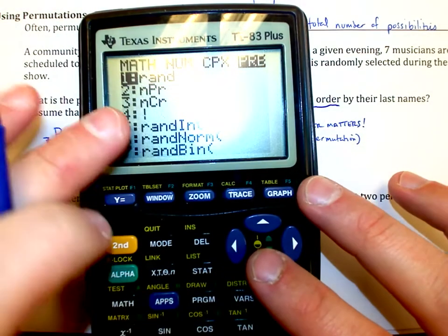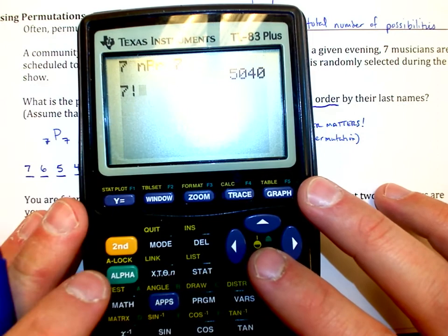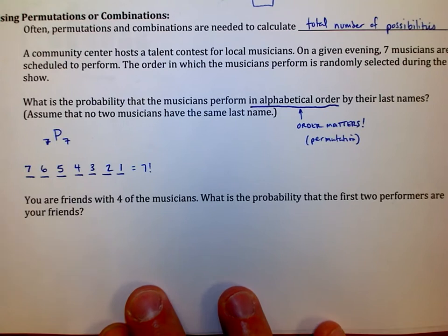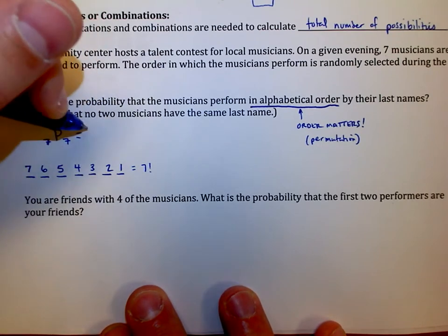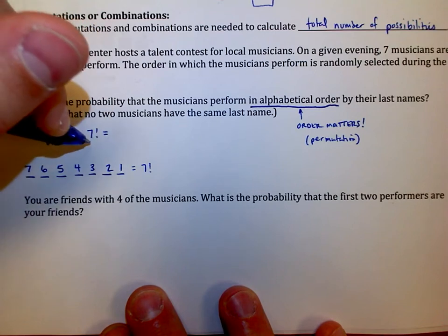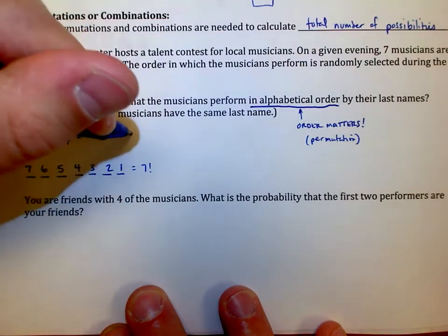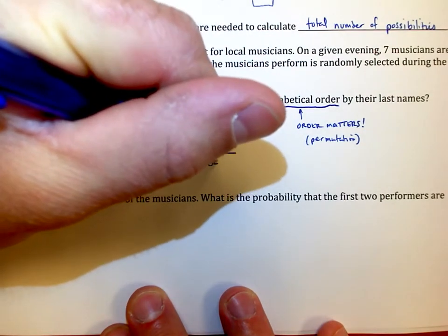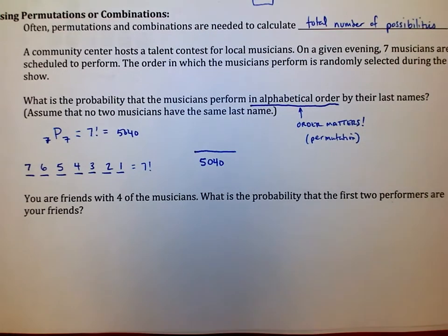math menu, probability, there it is, option four, 5,040 choices. You pick a way that makes sense to you. So seven people chosen seven at a time. I have seven factorial. That is 5,040 choices. Really, all we've done so far is we've found the bottom of the fraction. So there is the first part.